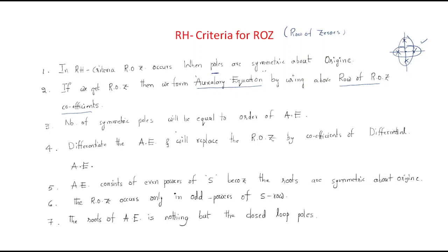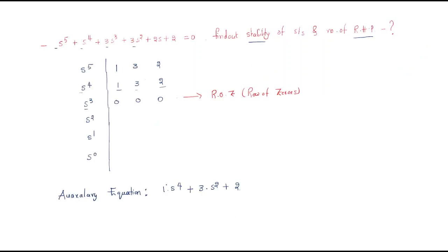The third point: the number of symmetric poles about the origin equals the order of the auxiliary equation. The auxiliary equation s^4 + 3s^2 + 2 has order 4. Therefore, the number of symmetric poles about the origin is 4.